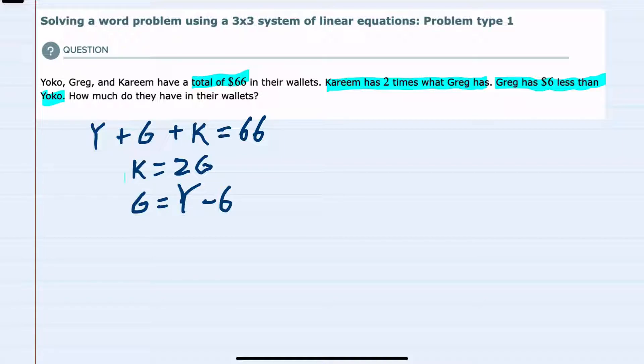I'll start by substituting K into the top equation. We know that K is 2 times G. So making that substitution in the top equation: Y plus G, replacing K with the second equation, K is 2 times G, so this would be plus 2 times G equals the 66 in the top equation.